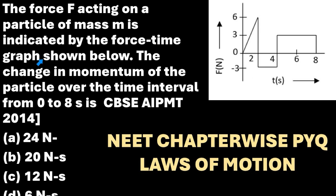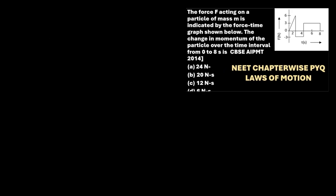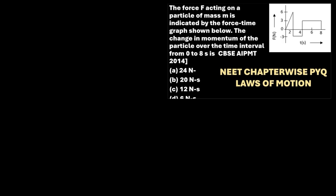The change in momentum of the particle over the time interval from 0 to 8 seconds is indicated by the force-time graph shown below. This is a direct application of the formula and area under the graph of the F-t graph.